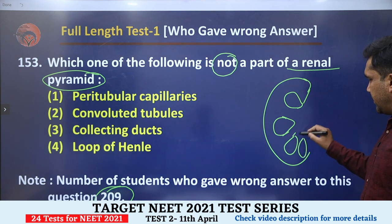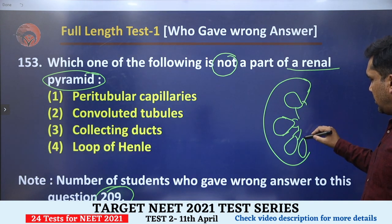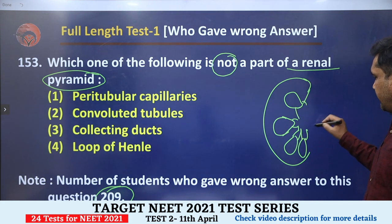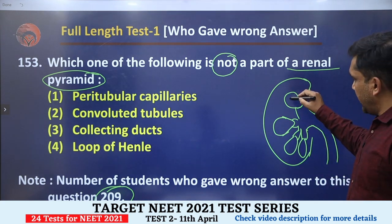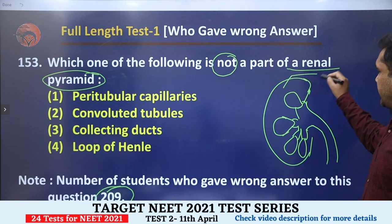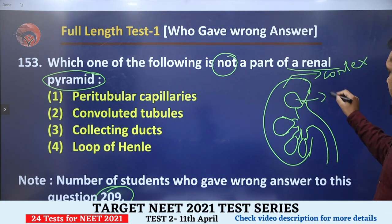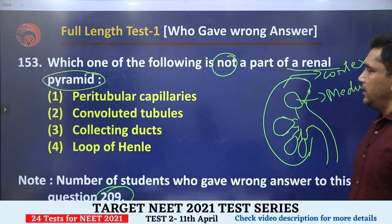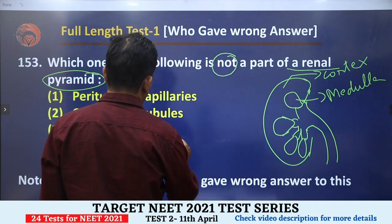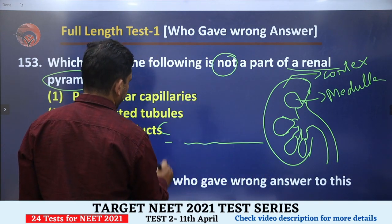These are renal pyramids. The structure here is called minor calyx, and there is also a major calyx. This is the structure of the ureter. This is the medulla, and this is the peripheral cortex. So if we divide the kidney into cortex and medulla, we can understand the arrangement of renal tubules.